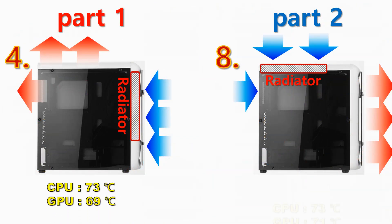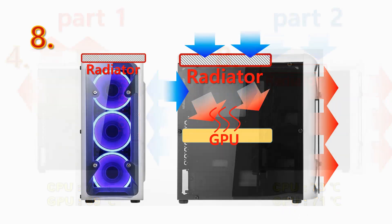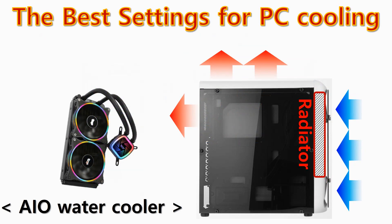Looking at the part 2 settings, CPU temperature showed the same result at 73 degrees, but GPU temperature was 2 degrees higher because the air was already being used for GPU cooling through the radiator at the top. So when using the AIO watercooler, it's most effective to use the part 4 setting from part 1. The radiator is advantageous for CPU cooling when attached to the front of the case, supplied directly from outside air, and the internal airflow is kept smooth by exhausting air through fans at the back and top of the case.